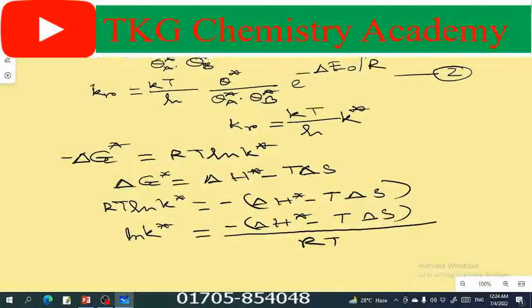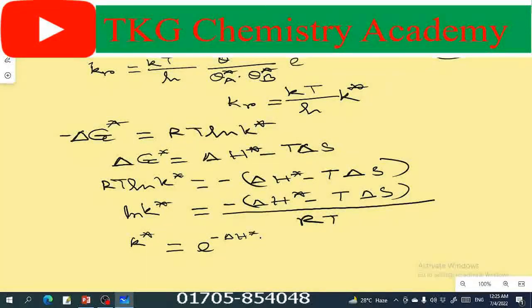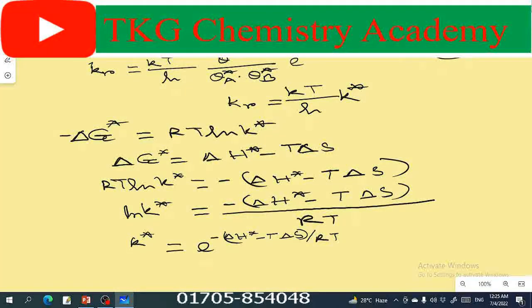K star equal to e to the power minus del H star, into del H star minus T del S divided by RT.